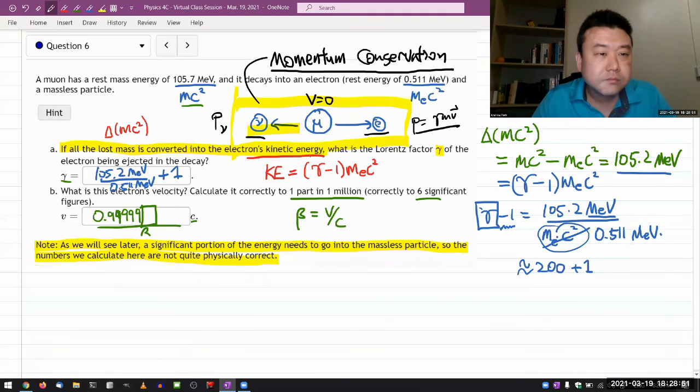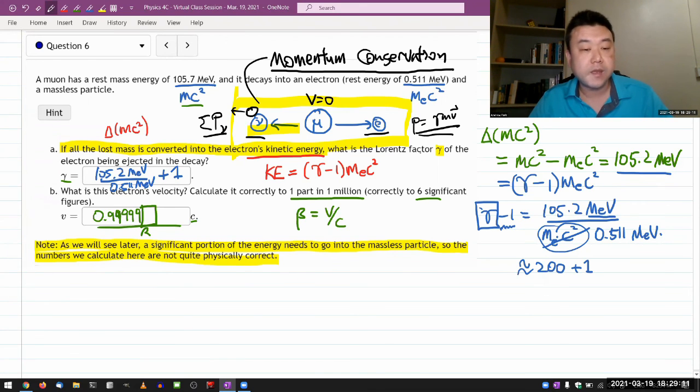Oh, actually, muon decays into electron and two massless particles. There's a muon neutrino and electron anti-neutrino. So there's actually two of these. So at the total, some of those momentum of particles, this has to be equal to this in magnitude, so that the net momentum will be zero. And depending on the arrangement, I think if the rest energy of electron were closer to muon, then electron could carry away most of the kinetic energy while still carrying equal amount of momentum. But in this ultra-relativistic case, these two will end up carrying about equal amount of total energy and momentum.